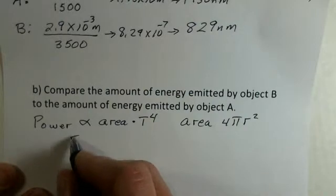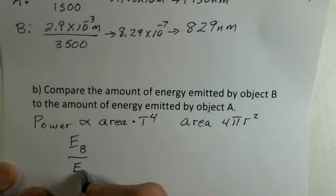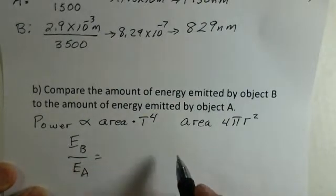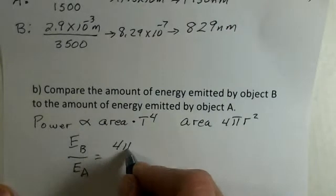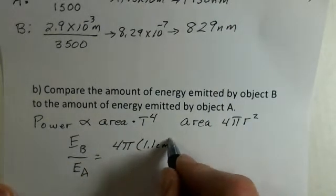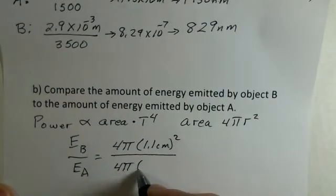We want to compare the two powers, the energy per second, or the energy in one second. So we want, I'll go ahead and write in terms of energy, energy from object B divided by energy from object A in one second. And in doing this, then I'd have 4π, our radius for B, and I'm going to have 4π and radius for A down here, 3500 to the fourth power.